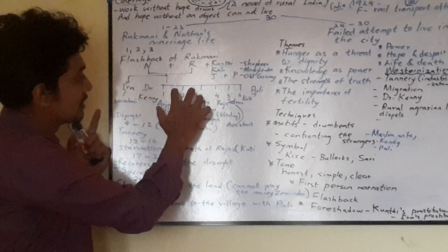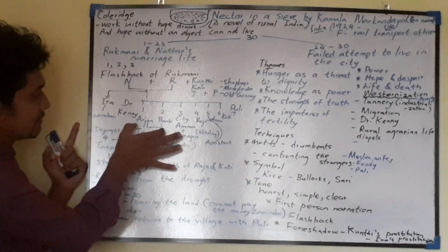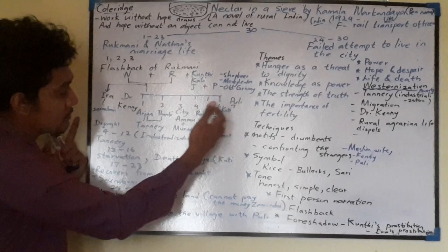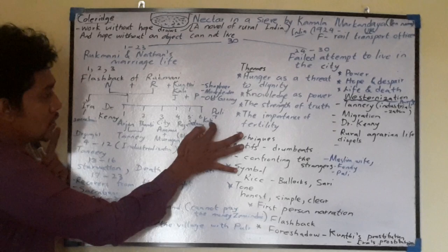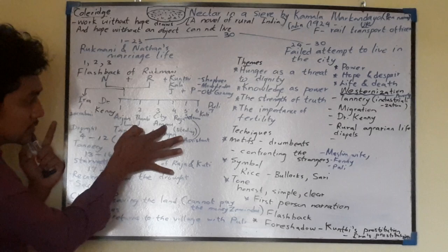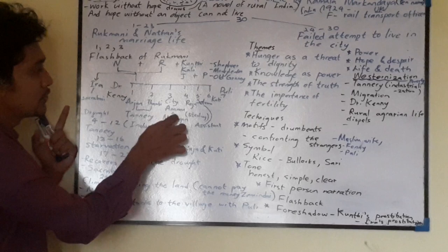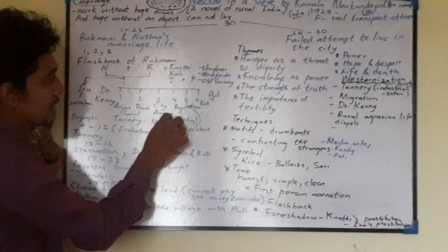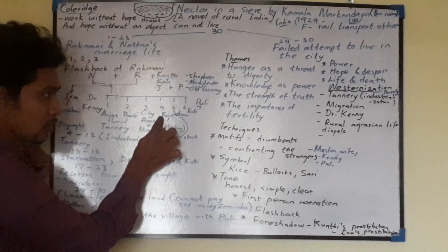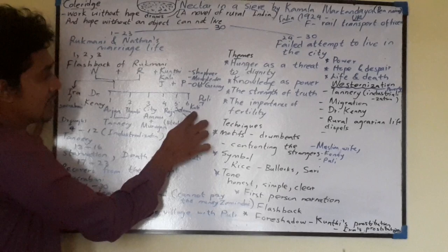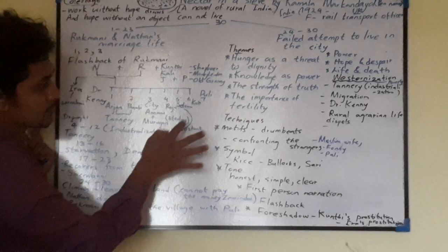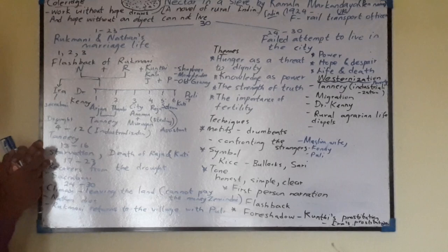The main children in the story are Arjun and Thambi, who work in a tannery — which symbolizes industrialization. The other sons are Murugan, Raja, Selvam, and Kuti. Murugan's wife is Ammu, and they had a very unsuccessful marriage life; Murugan deserted Ammu and their children. Raja was caught stealing hides from the tannery and was imprisoned. Selvam, Kuti, and the other kids in the story also suffer from starvation. Puri is the adopted child in the story.